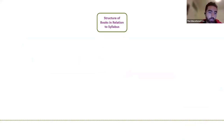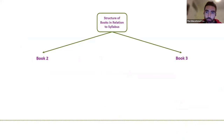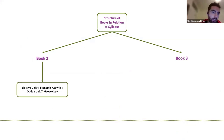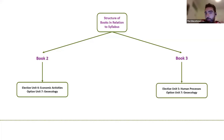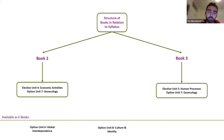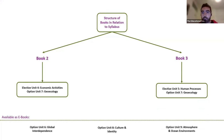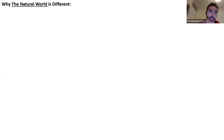Just to go through the structure of Book Two and Book Three: Book Two is our elective unit — economic activities — joined together with our most popular option, Geoecology. Book Three is human processes, also joined with Geoecology. Available as eBooks are all the other options — Global Interdependence, Culture and Identity, and Atmospheres and Ocean Environments.